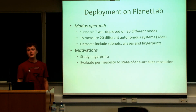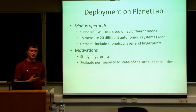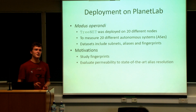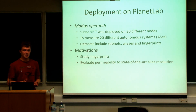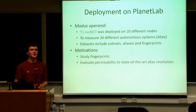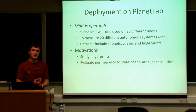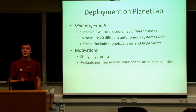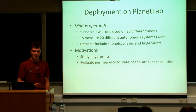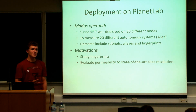We also deployed Trinet on the PlanetLab testbed, using 20 different PlanetLab nodes to measure 20 different autonomous systems with various scales across the internet topology. The datasets include subnets, aliases, and fingerprints. The main motivation for this in-the-wild study is not only to collect data on different autonomous systems, but also to study the fingerprints and evaluate the permeability of the different state-of-the-art alias resolution techniques in the wild.